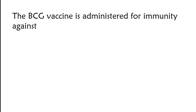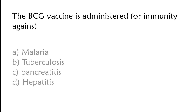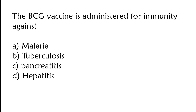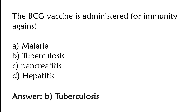The BCG vaccine is administered for immunity against: malaria, tuberculosis, pancreatitis, or hepatitis. The correct answer is option B. The BCG vaccine is administered for immunity against tuberculosis.